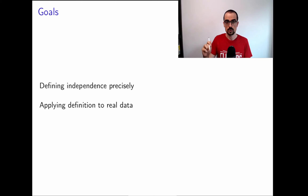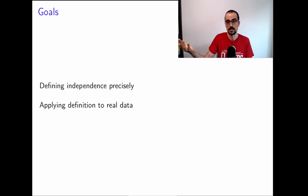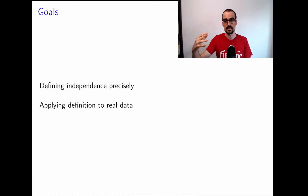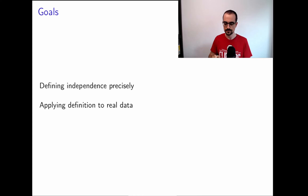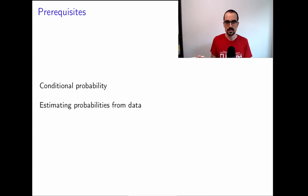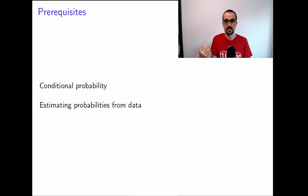The goal here is to define independence precisely, then conditional independence, and to apply the definition on real data and see what happens. The prerequisites for this material are conditional probability, and you also need to know about estimating probabilities from data, which is covered in the previous video.